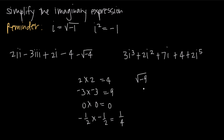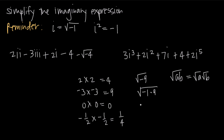Here's how we solve that problem. We know the radical rule that the square root of AB — two numbers A and B multiplied together — equals the square root of A times the square root of B. We can separate them into their own square roots. So the square root of negative 9 is the same as the square root of negative 1 times 9. Negative 1 times 9 is still negative 9 — we haven't changed anything. Then, by the square root rule, we get the square root of negative 1 times the square root of 9.